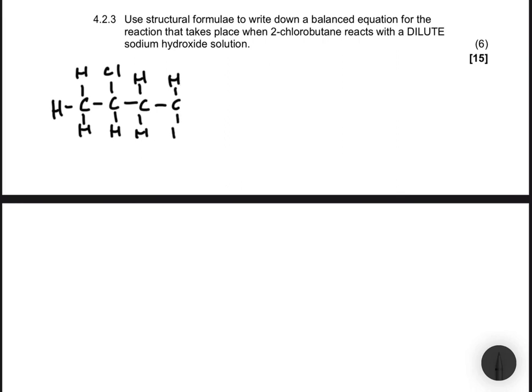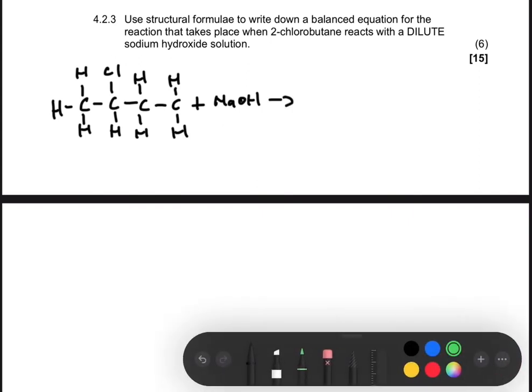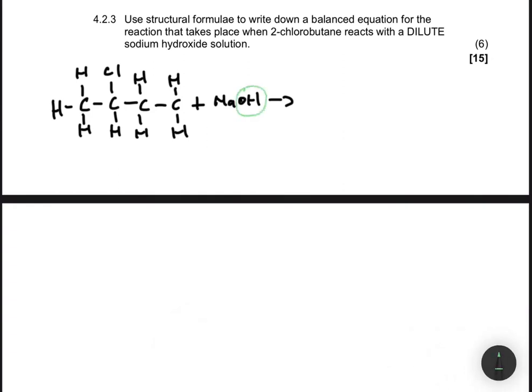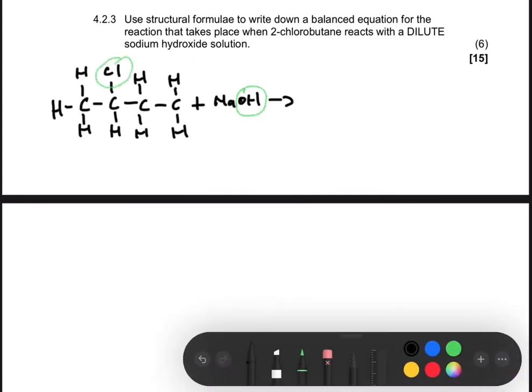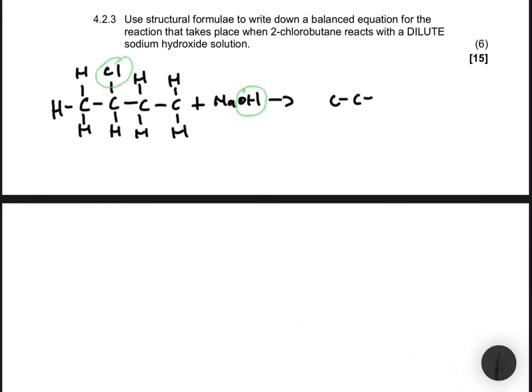We're saying that we're using dilute sodium hydroxide solution. So let's have plus NaOH. This is going to give us the substitution reaction. How does it happen? This OH here is going to replace the halogen Cl.